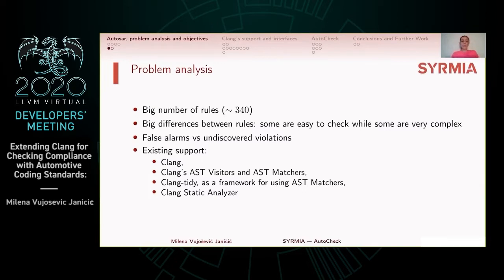The existing support includes CLANG, as some rules are already implemented within it. It also includes two interfaces to CLANG's abstract syntax tree: visitors and matchers. There are two important tools: ClangTidy, a framework that offers elegant usage of CLANG's matchers, and the Clang Static Analyzer, a framework that offers more precise analysis including exploded control flow graphs of programs. We carefully considered all these possibilities.